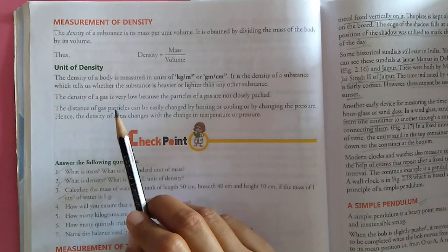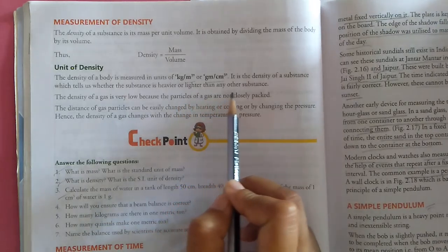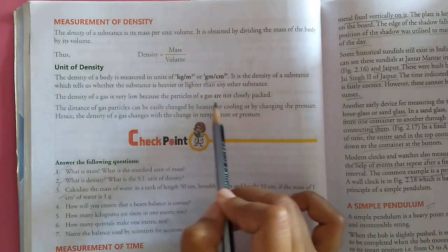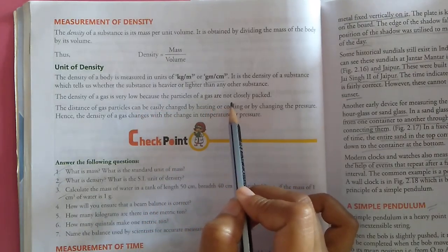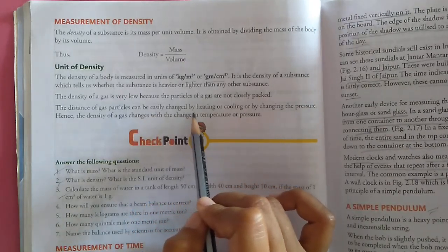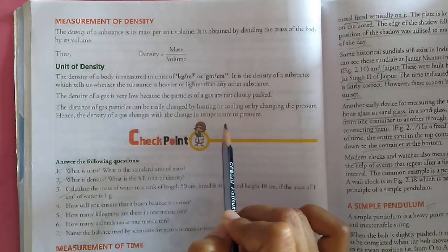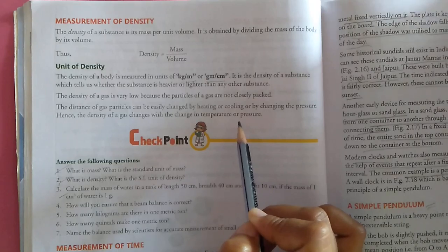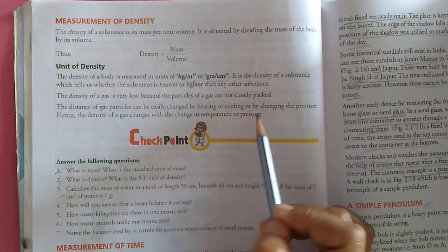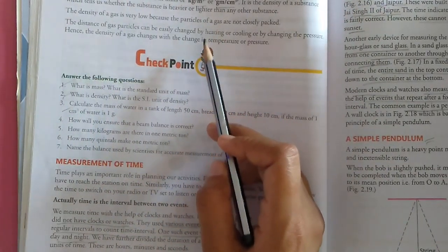The density of a substance tells us whether the substance is heavier or lighter than any other substance. The density of gases is very low because the particles of gas are not closely packed. The density of gas particles can be easily changed by heating or cooling or by changing the pressure. Hence density of a gas changes with change in temperature or pressure. There are a few questions regarding this. Try to do this by yourself.